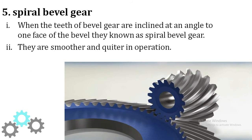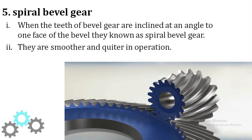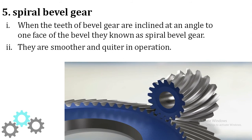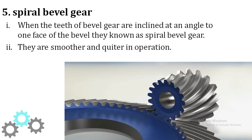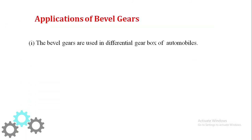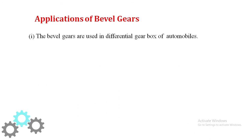The spiral bevel gear has teeth inclined at an angle to the face of the bevel — hence called spiral bevel gear. They are smoother and quicker in operation because angular faces on the teeth surface result in very smooth meshing with no noise generated during gear meshing. This is a very important advantage of spiral bevel gears.